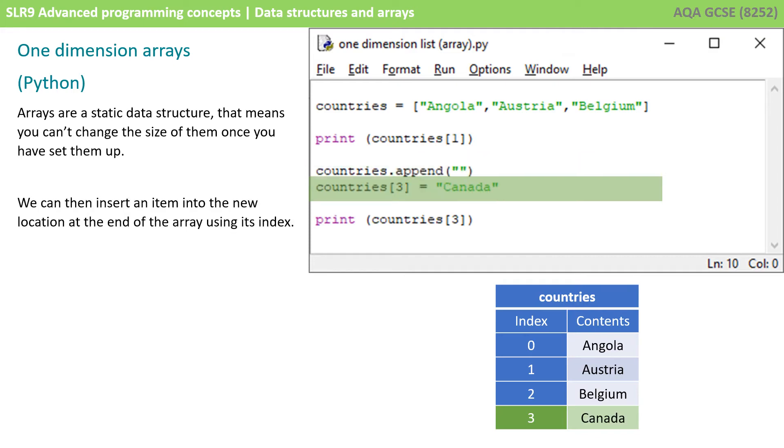So, with Python, we can insert an item into the new location at the end of the array using its index. So, here we've added Canada to the third index or the fourth position in the countries array.